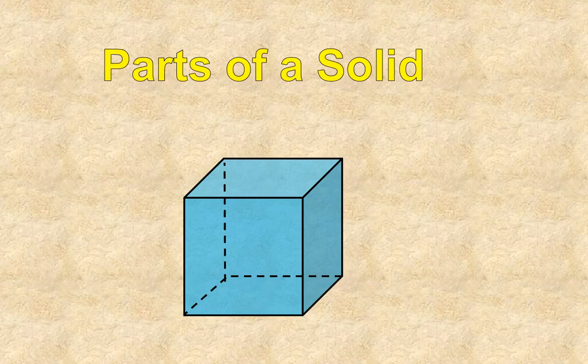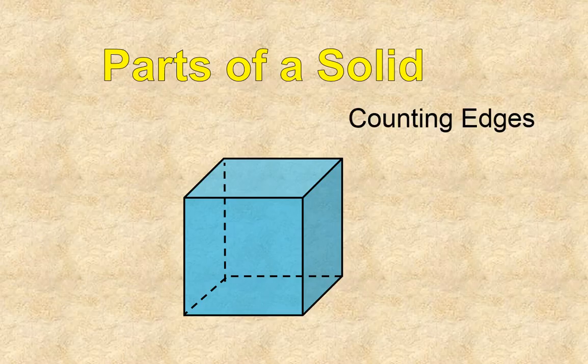Another part of a solid is an edge. On a two-dimensional polygon, for example, you would have a side. Well, with three dimensions, you have an edge. And you can see that there's an edge there where two, well, I don't want to get too far ahead. So let's just go ahead and count the edges.